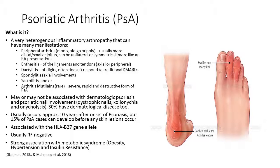Some of the presentations involve peripheral arthritis, which can be mono, oligo, or poly. With psoriatic arthritis it's usually a bit more random than rheumatoid arthritis — it is usually asymmetrical, unilateral, and kind of jumps about from joint to joint. Although there is a presentation which is very similar to rheumatoid arthritis, being more bilateral and symmetrical.